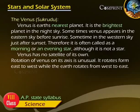Rotation of Venus on its axis is unusual. It rotates from east to west, while the Earth rotates from west to east.